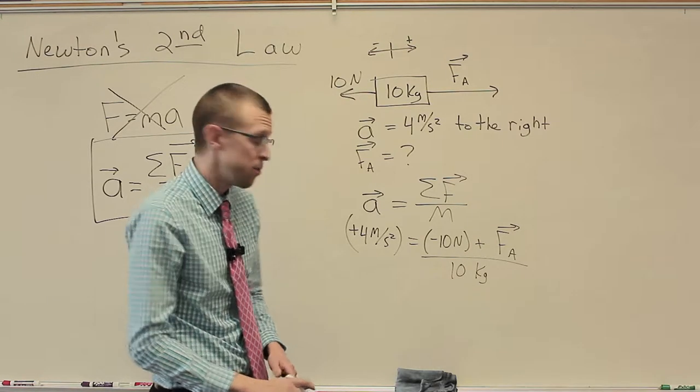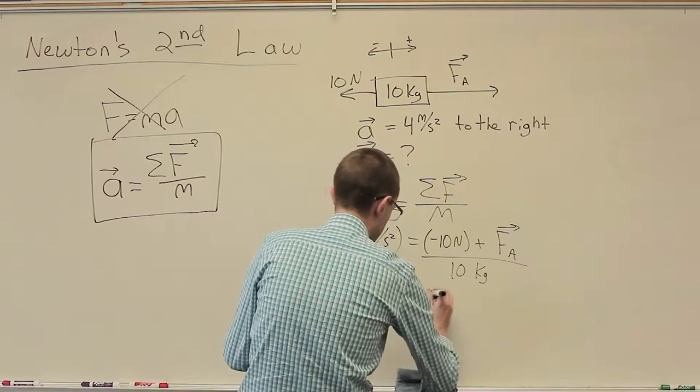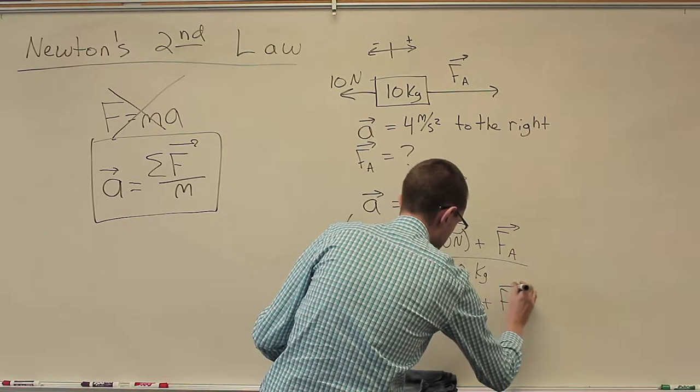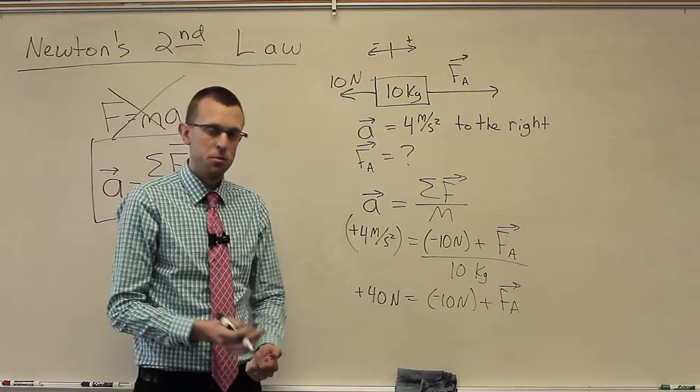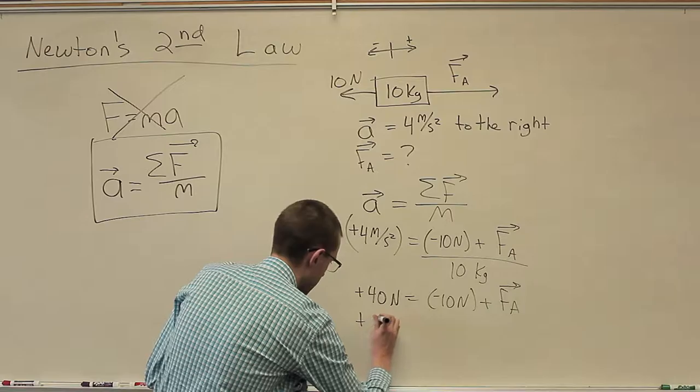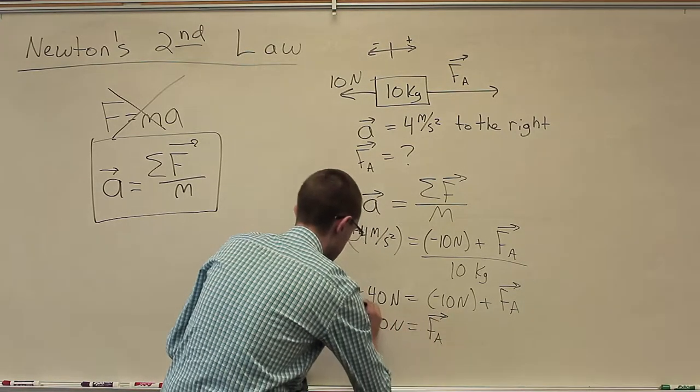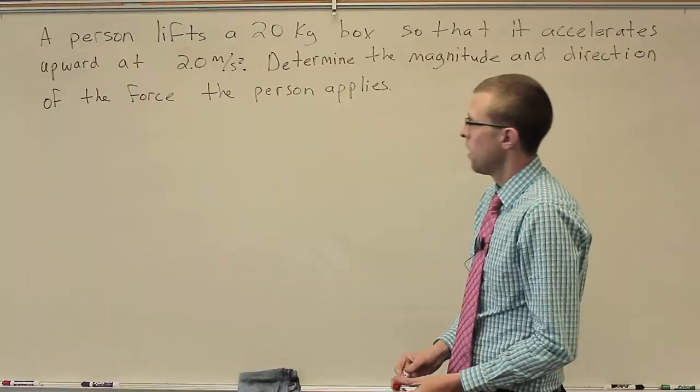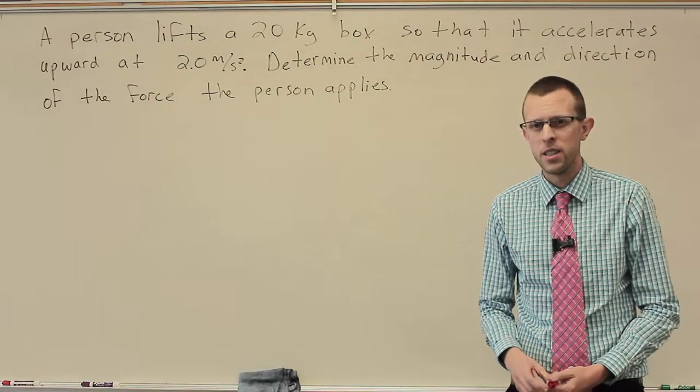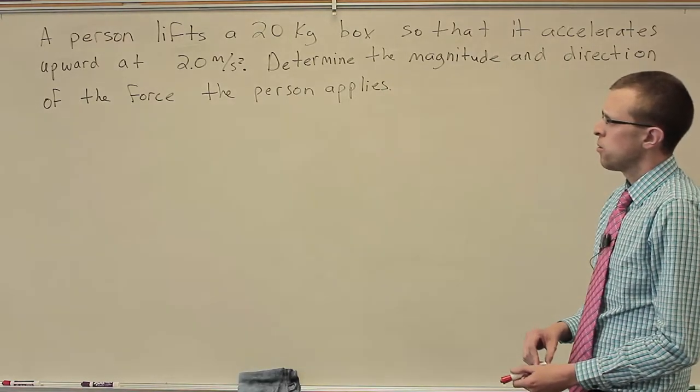We need to isolate F A. We're done with the physics setup. We just have a little algebra to finalize here. So we'll multiply both sides by 10 kilograms. That'll give us 40 kilogram meters per second squared. Remember, the short way to write that is newtons. And that's in the positive direction. And that's equal to negative 10 newtons plus F A. And then we'll add 10 newtons to both sides, or subtract the negative 10 newtons from both sides. And we'll end up with positive 50 newtons equals F A.